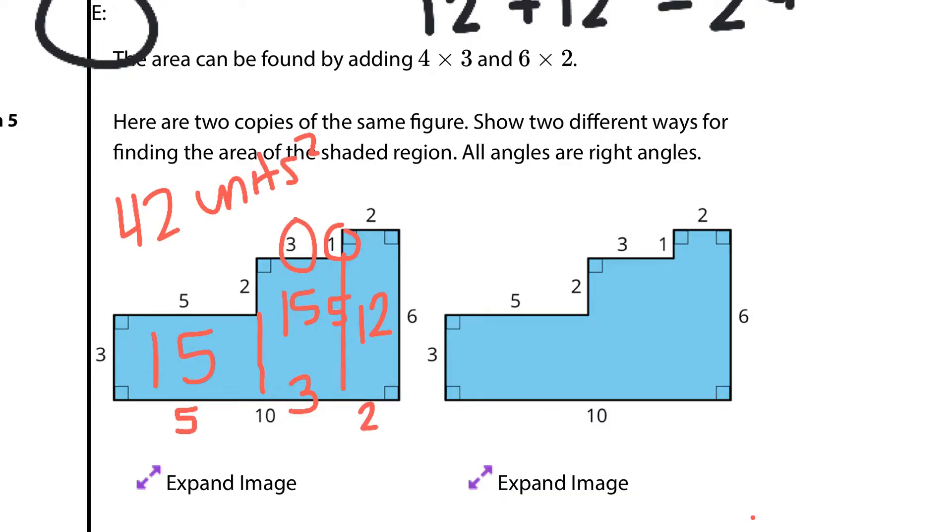Now, what if we work horizontally in the other one? What if I draw here and here? Well, my little one is 2 times 1 which is 2. My large one looks to be 10 times 3 which is 30. And now, 3 plus 2 gets me a length of 5 here times that 2 is 10. 30 plus 10 is 40 plus 2 is 42 square units once again. Two different ways.